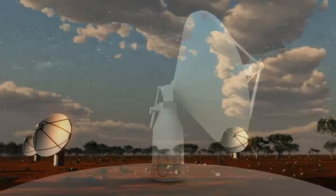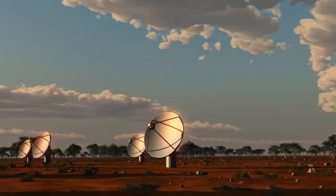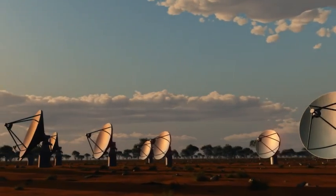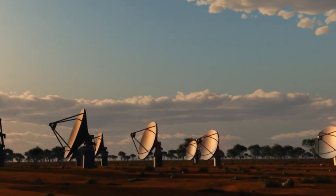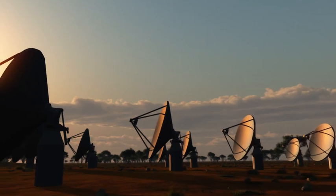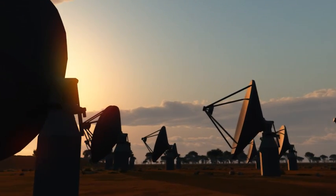The Square Kilometre Array, or SKA, consists of thousands of radio antennas working together to collect the faintest whispers from the depths of space. A telescope that looks not at visible light, but at the radio part of the spectrum.